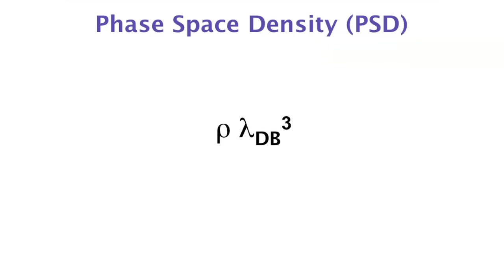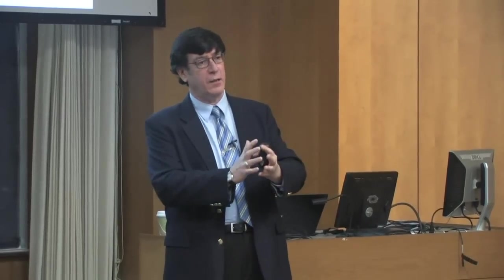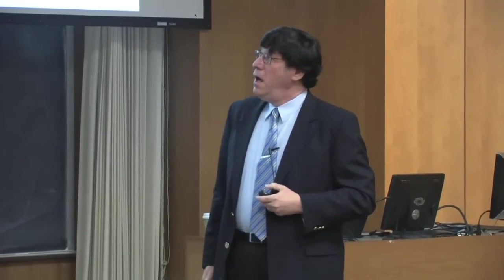Before I explain how we progressed, I need to introduce one equation. There is one number to remember: the phase space density. It is a dimensionless parameter characterizing the entropy of the system — the larger the phase space density, the lower the entropy. It equals the density in particles per cubic centimeter times the de Broglie wavelength cubed. You increase it by raising the density, reducing the temperature, or both.